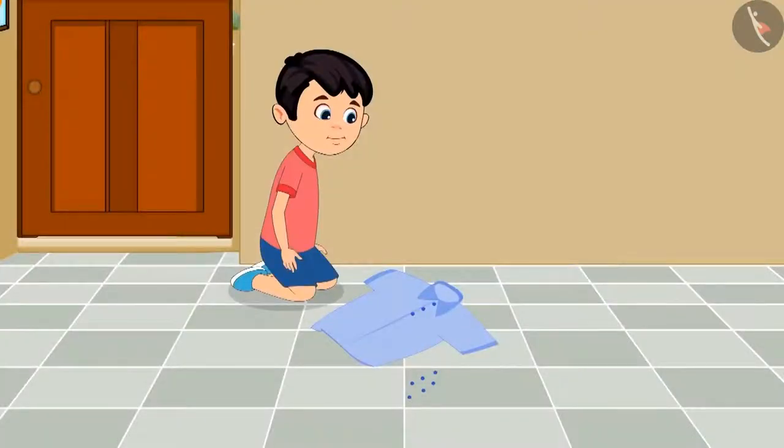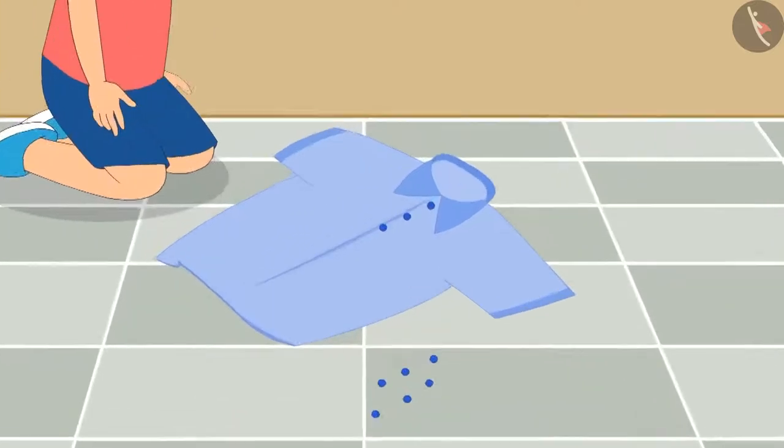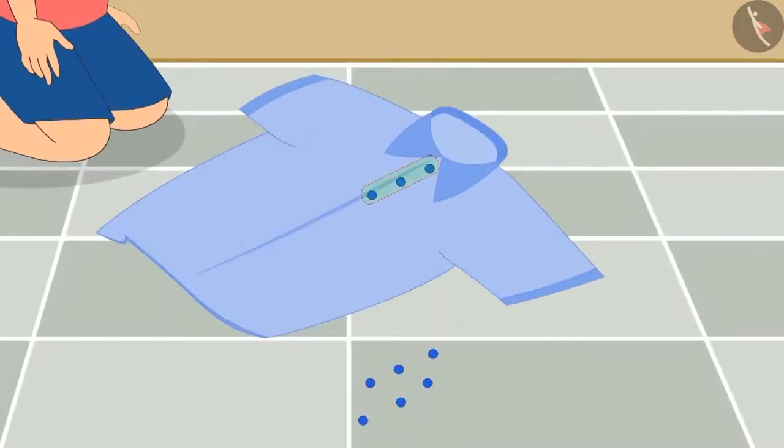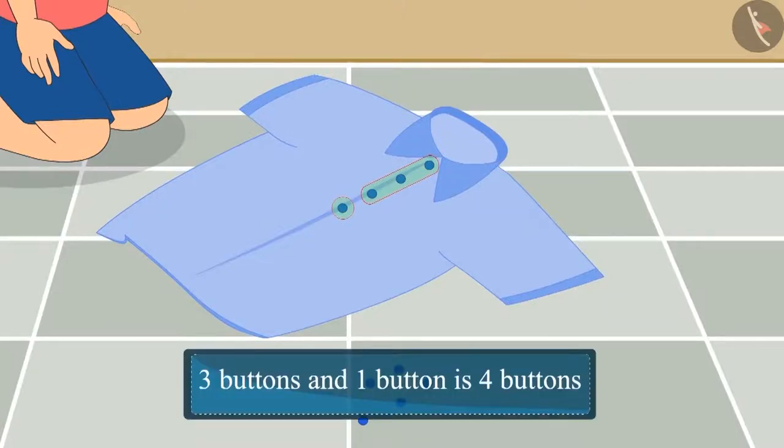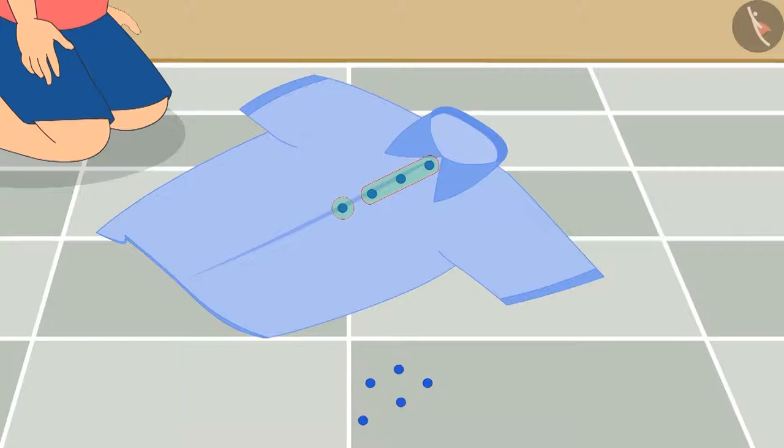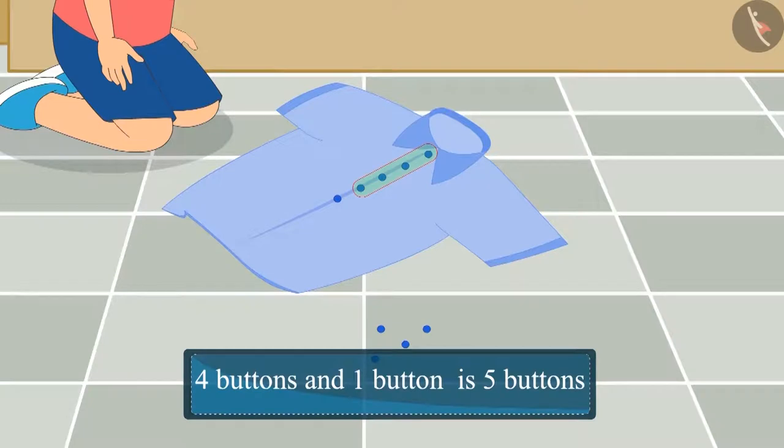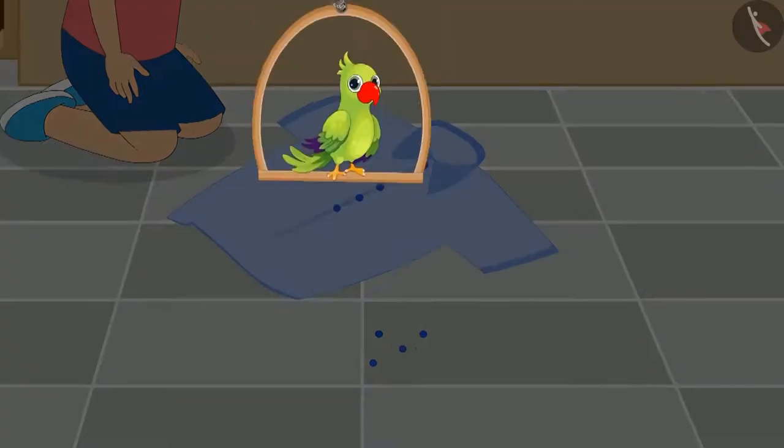Today Chutu wants to stitch a few buttons on his shirt. He already stitched three buttons and then he stitched one more button. Three buttons and one button. Now Chutu has stitched one more button on his shirt. So four buttons and one more button is five buttons.